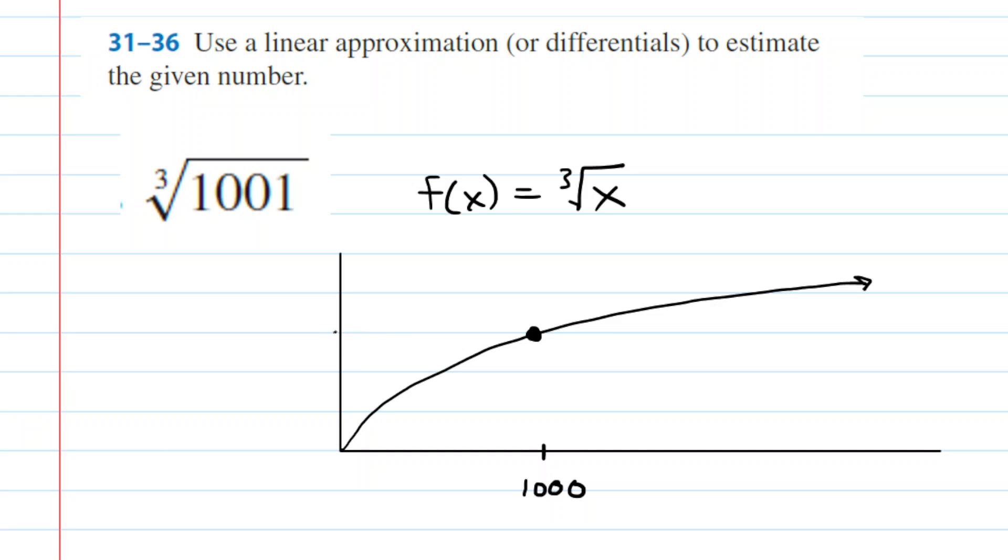So we're going to select an x value of 1,000. And what we want next is the y value, and that's easy to do, because to find a y value, you would just plug your x value into your function. So you would have the cube root of 1,000, which of course is equal to 10. So there is our point. It's located at coordinates 1,000, 10.